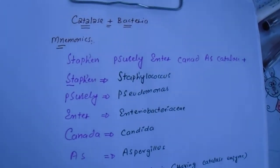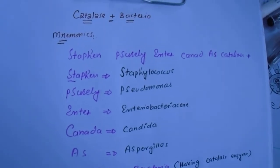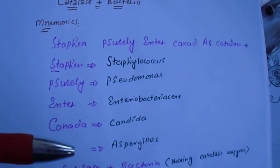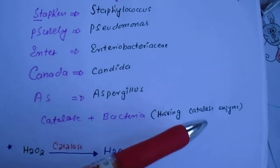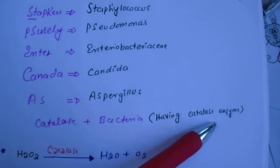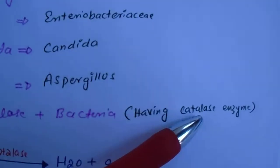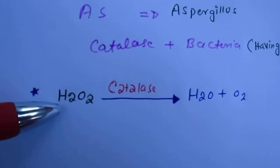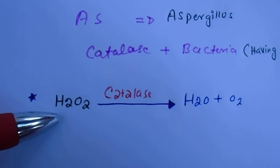Why are these important to know? Why is it important that we look at catalase-positive bacteria? Because these bacteria have an enzyme called catalase. The function of catalase is that it converts hydrogen peroxide into water and oxygen.